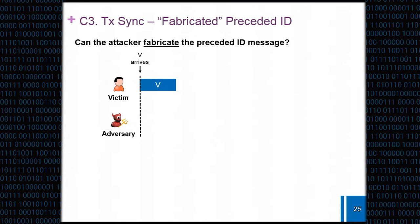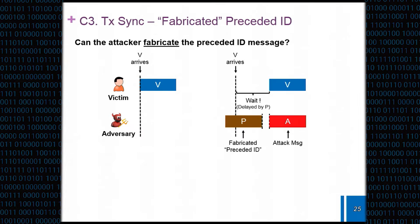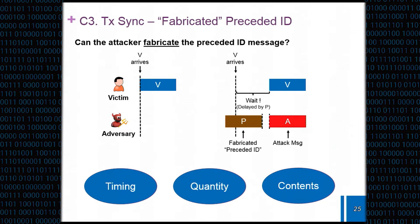Another question is, can the attacker actually fabricate this? Because the attacker actually has a rough estimation on when the victim will transmit its next message, although not really exactly, what it can do is right before that timing, it can inject a fabricated preceded ID message, make the victim's message get delayed because the bus will be busy, and then synchronize its timing. We also analyzed the feasibility of such an attack in terms of three different factors: timing, quantity, and contents. Although we do not really go into detail, it showed that with just one fabricated preceded ID message, the attacker can achieve the bus off attack.